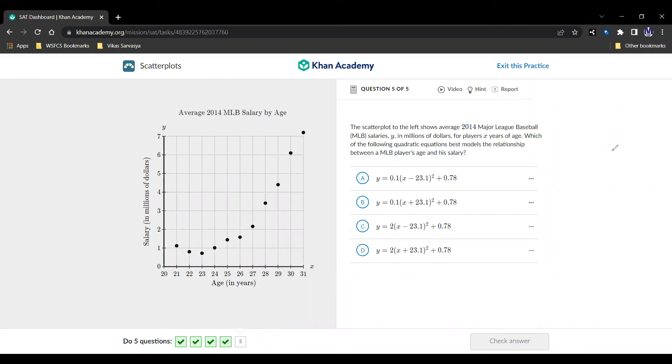So next question. The average 2014 MLB salary by age. Here it is. The salary versus the age. The scatter plot to the left shows average 2014 Major League Baseball MLB salaries in millions of dollars for players x years of age. Which of the following quadratic equations best models the relationship between an MLB player's age and his salary. So let's see what we can do here. So they are all positive a. And they all open up. So that is going to be correct. But we have different signs of the vertex. Right? This one and this one have positive vertexes. And then these two have negative vertexes. Right here, positive x. And we can, right off the bat, get rid of those two that have negative vertexes.